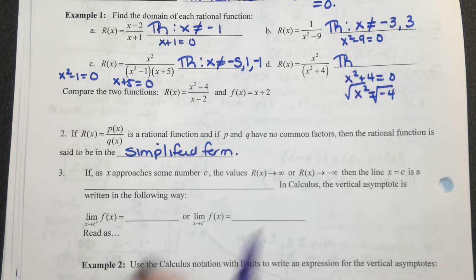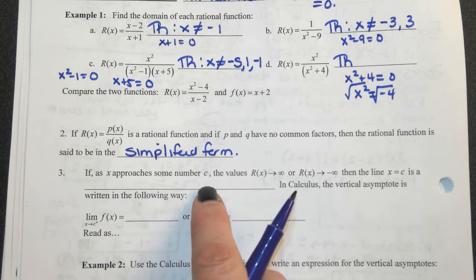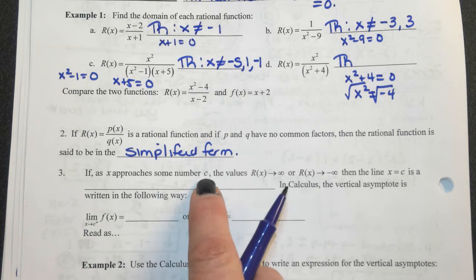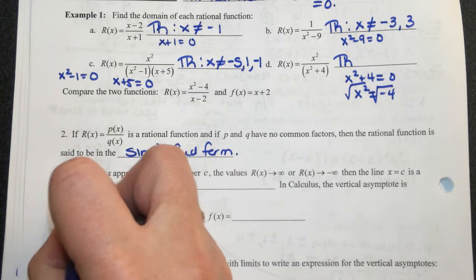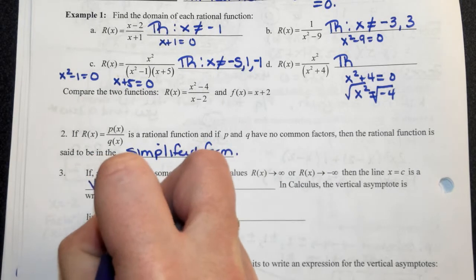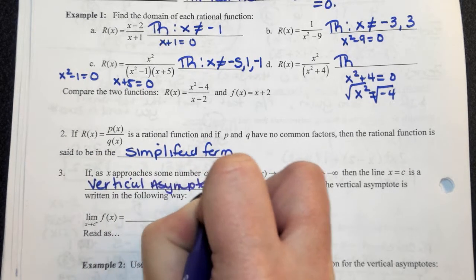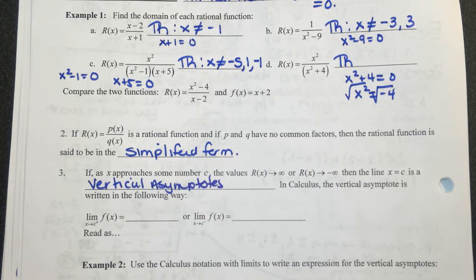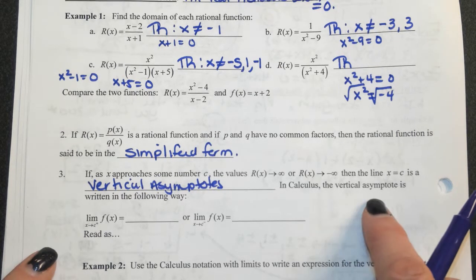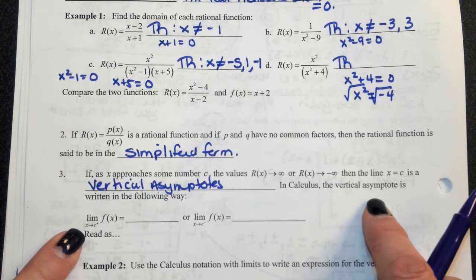If x approaches some number c, and as you're approaching some value the graph turns up or down, remember last year you talked about vertical asymptotes. These vertical asymptotes relate to limits, which we're going to introduce in the next unit. A vertical asymptote in calculus is written a certain way.